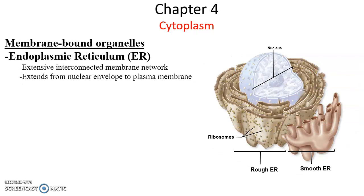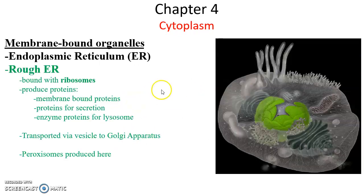First up for our organelles is the endoplasmic reticulum. The endoplasmic reticulum is extensive interconnected membranes going from the nucleus out throughout the cytoplasm, all the way out and coming close to the plasma membrane. The rough endoplasmic reticulum is the part that is bound with ribosomes, and therefore it is involved in protein production.